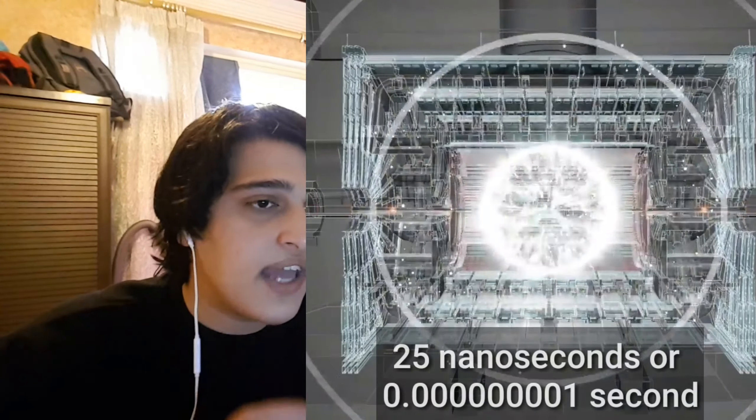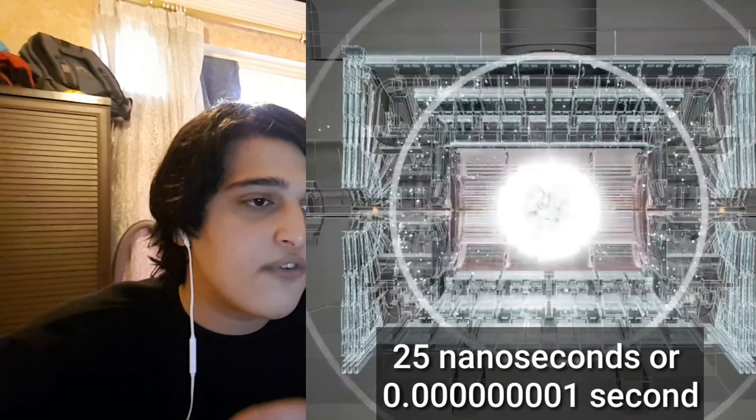Every 25 nanoseconds, two groups of protons collide. And when the protons collide, it looks like this.